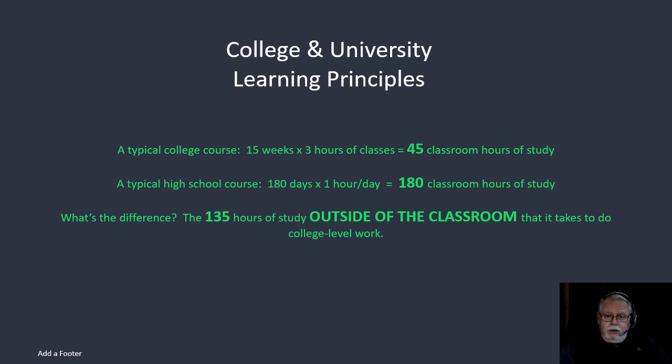At the college level, instead of 180 classroom hours, you're going to have 45 hours — 15 weeks at three hours each. The difference is 135 hours of classroom time that does not exist at the college or university level. You make it up on your own, doing your studies outside of the classroom: 135 hours over 15 weeks, which is an average of nine hours per week per three-hour class.